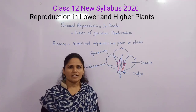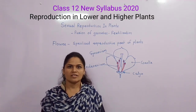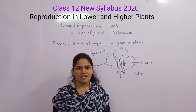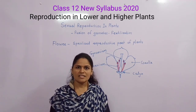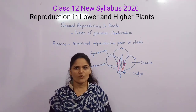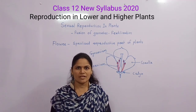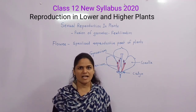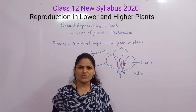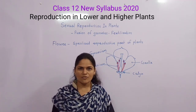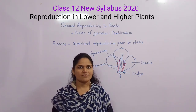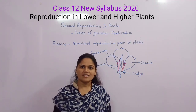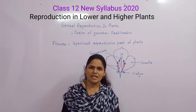In vegetative reproduction, reproduction takes place without fertilization — there is no fusion of gametes. Vegetative reproduction does not involve gametes; it takes place by vegetative parts like root, stem, and leaves.